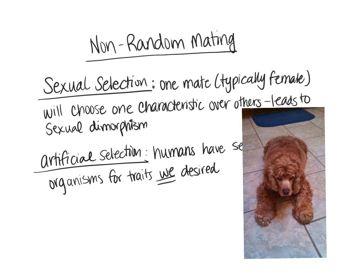With artificial selection, humans select the particular traits that we want, and we breed the organisms — many times, unfortunately, with inbreeding — to get these characteristics. You can kind of tell her eyes have this funny color to them; that's because of all the inbreeding done with Cocker Spaniels. They tend to have vision problems, and she's blind in both her eyes. But with artificial selection, there's something desirable that we wanted, and we bred the characteristics to get the desired outcome.